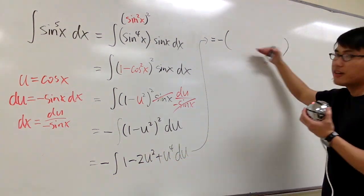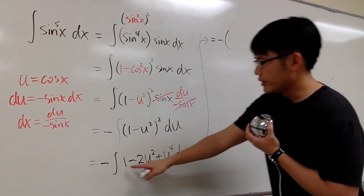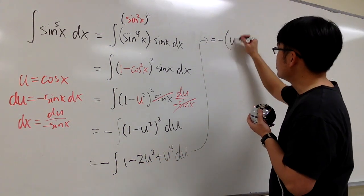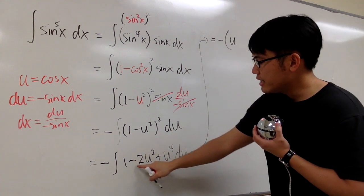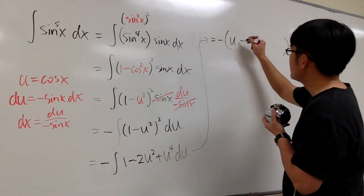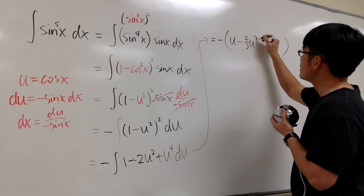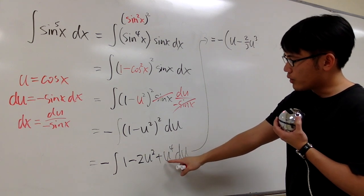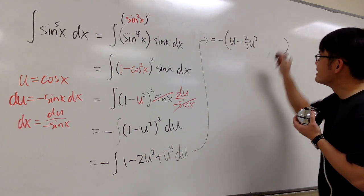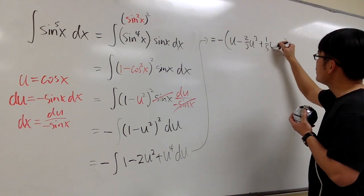So the integral of 1 in the u world will be just u. And the integral of negative 2u to the second power will be minus 2 third u to the third power. And then the integral of u to the fourth power is plus 1 over 5u to the fifth power.